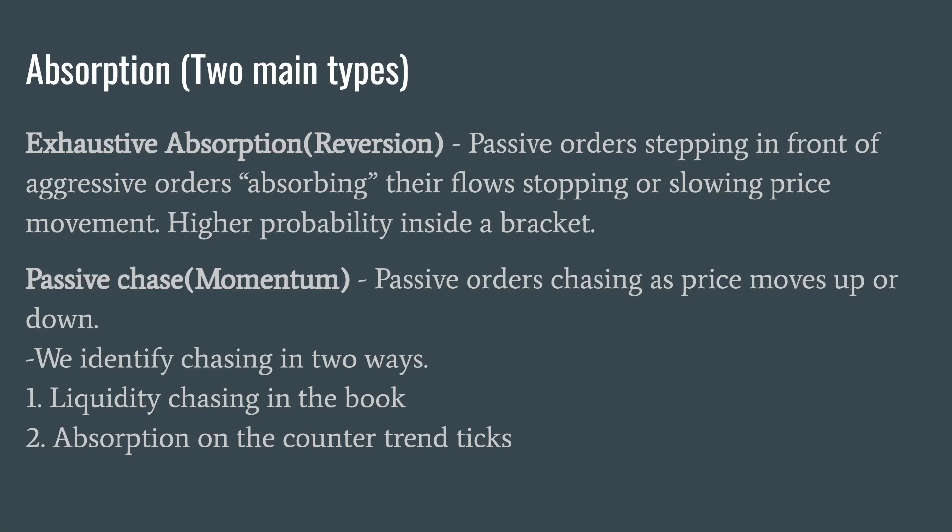We can identify the passive chase in two ways. The first version I would only recommend if you're a scalper, which is in the order book — you get into the DOM and watch your asks and bids chase price directionally. Alternatively, the much easier version I would recommend to everybody is absorption on the counter-trend ticks. You get into your footprint and identify a trend. For example, if price is trending up, every time you see the back ticks going down, you want to see heavy selling come in and very little follow through. This tells you that the passive bid is moving up and chasing price.